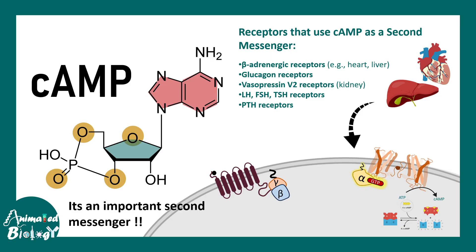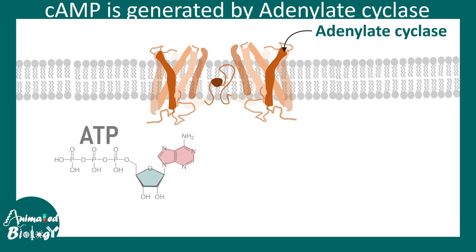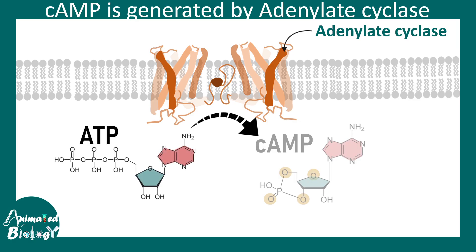Cyclic AMP is generated by an enzyme known as adenylate cyclase. Adenylate cyclase converts ATP into cyclic AMP — notice that the phosphate group is now in a cyclic format. So cyclic AMP is the second messenger, or the middleman, which conveys the message from the receptor level to the downstream level.